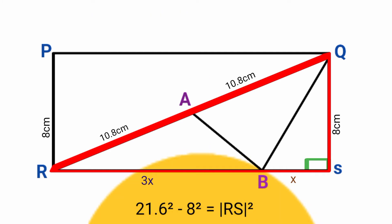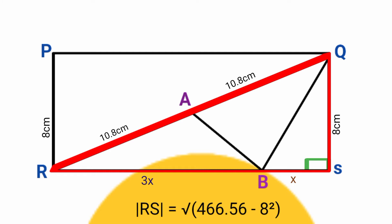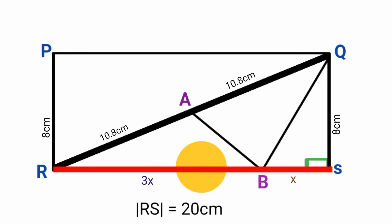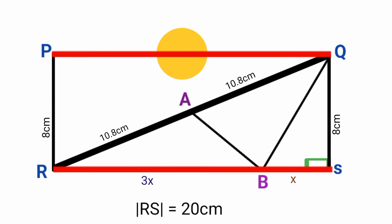Making line RS the subject: RS equals the square root of 21.6 squared minus 8 squared. 21.6 squared is 466.56, and 8 squared is 64. 466.56 minus 64 is 402.56, and the square root of 402.56 is approximately 20. So line RS equals 20 centimeters, and therefore line PQ is also 20 centimeters by the rectangle's opposite-sides property.